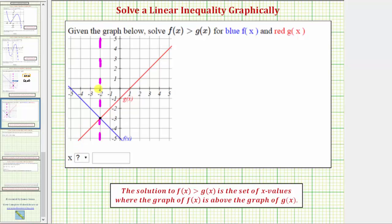Notice to the left of negative two, the graph of f of x is above the graph of g of x. So all the x values to the left of negative two are solutions to the given inequality.